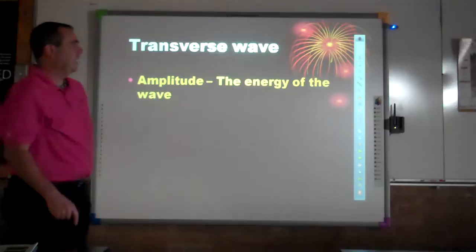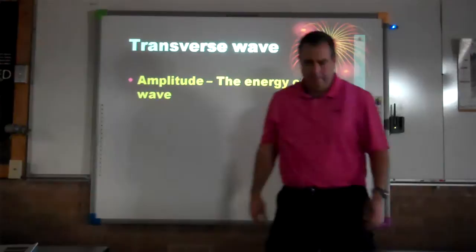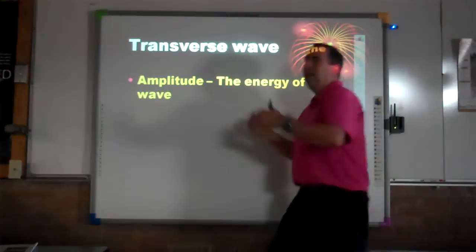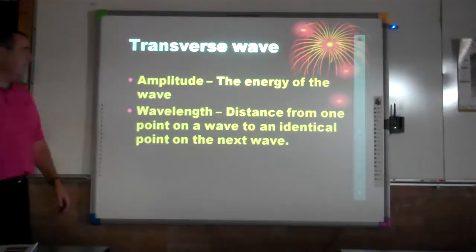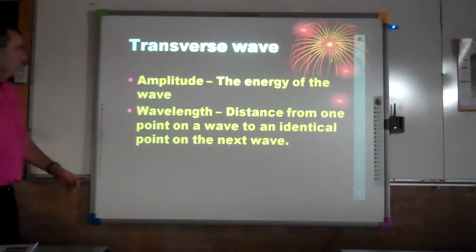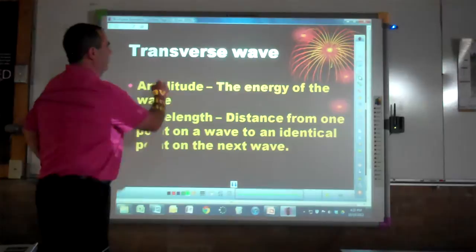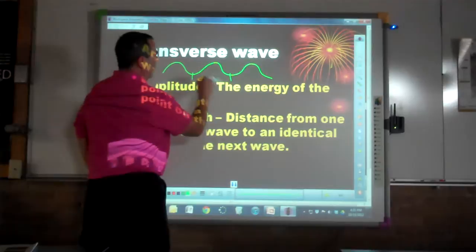Looking at vocabulary: amplitude is the amount of energy a wave has. Think of going to the beach — a wave that hits you shin-high has a lot less energy than one that hits you shoulder-high; the shoulder-high one will probably knock you over. Wavelength, going from crest to crest, is the distance from one point on a wave to an identical point on the next wave. You can go from rest position to rest position or low point to low point.